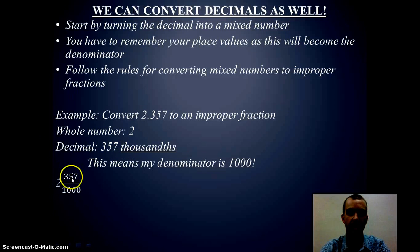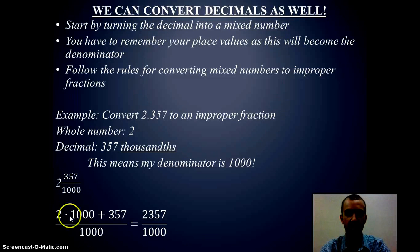So now I have two and then I have three hundred fifty-seven over one thousand, and I can convert it now to my improper fraction. Two times one thousand plus three hundred fifty-seven. So my improper fraction would be two thousand three hundred fifty-seven over one thousand.